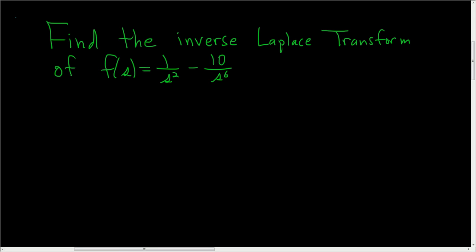Find the inverse Laplace transform of 1 over s squared minus 10 over s to the 6th. The formula for the inverse Laplace transform of n factorial over s to the n plus 1 is simply t to the n.